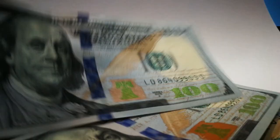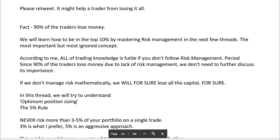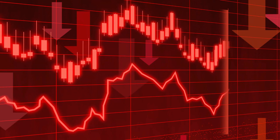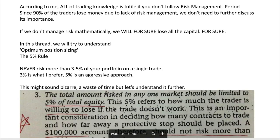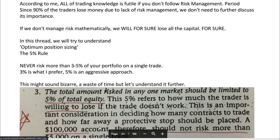So let's learn how to be in that top 10%. If we don't manage risk mathematically, we will lose all our money for sure. In this video we're going to understand optimum position sizing — the five percent rule. Never risk more than three to five percent of your portfolio on a single trade. Three percent is what the author prefers; five percent is an aggressive approach. This might sound bizarre or like a waste of time, but let's understand it further.